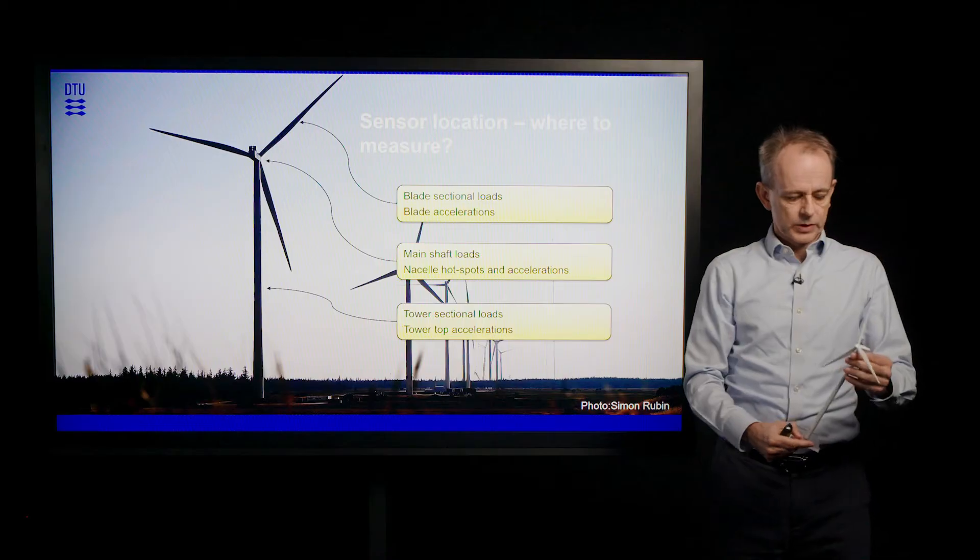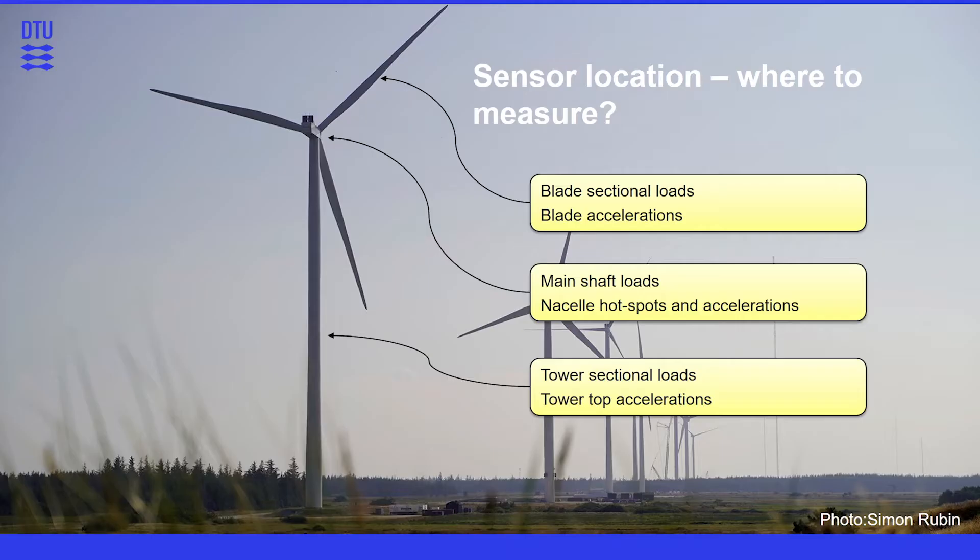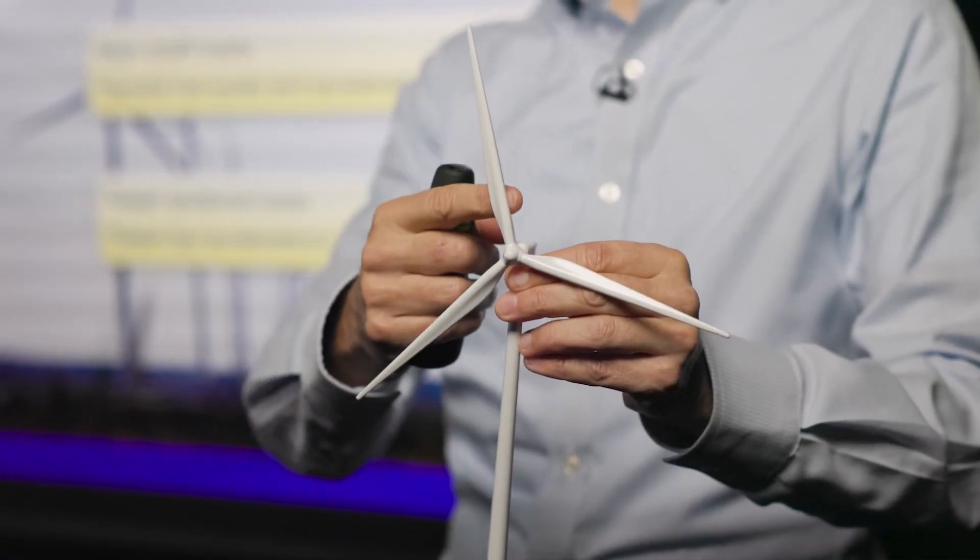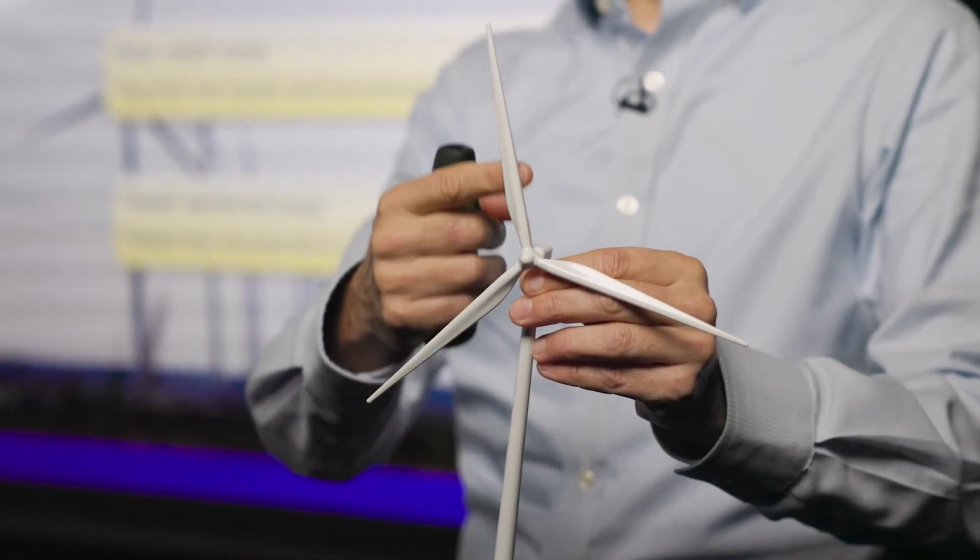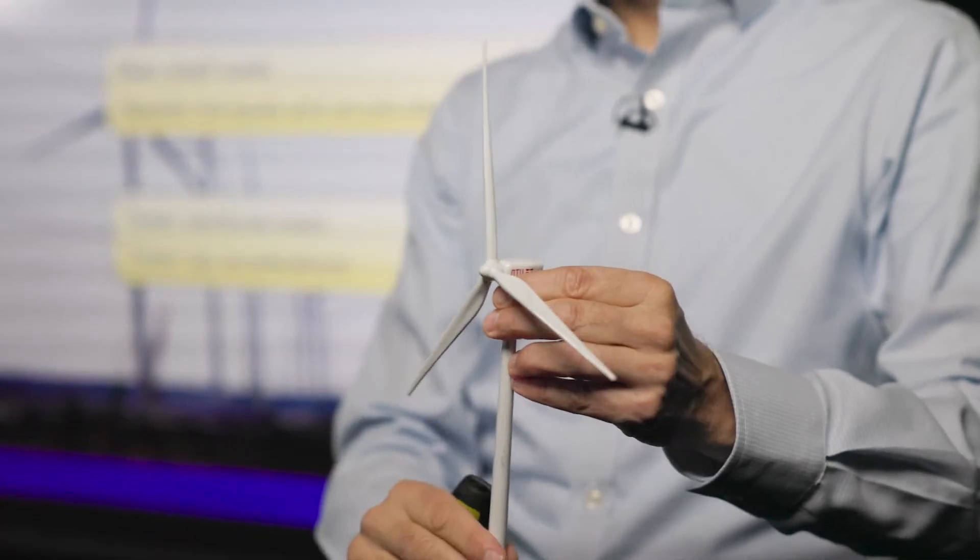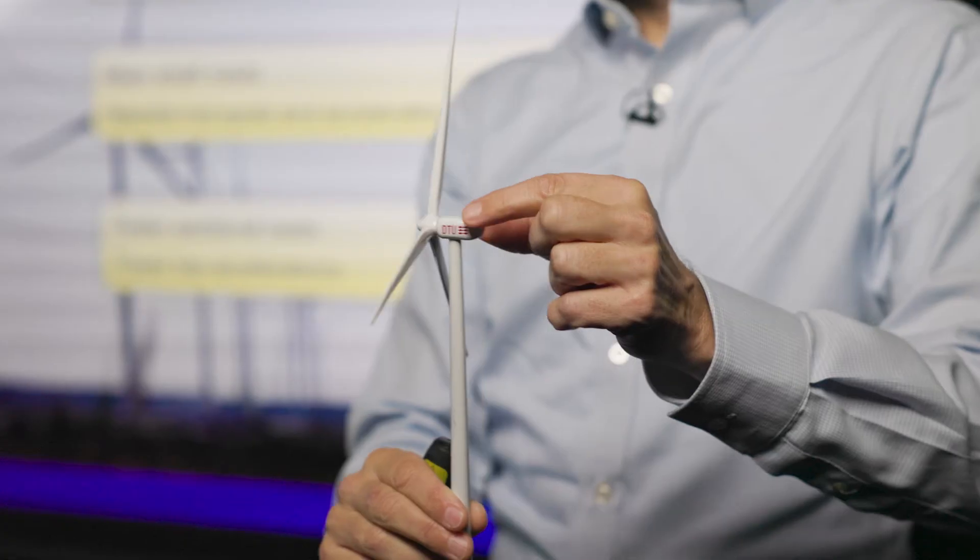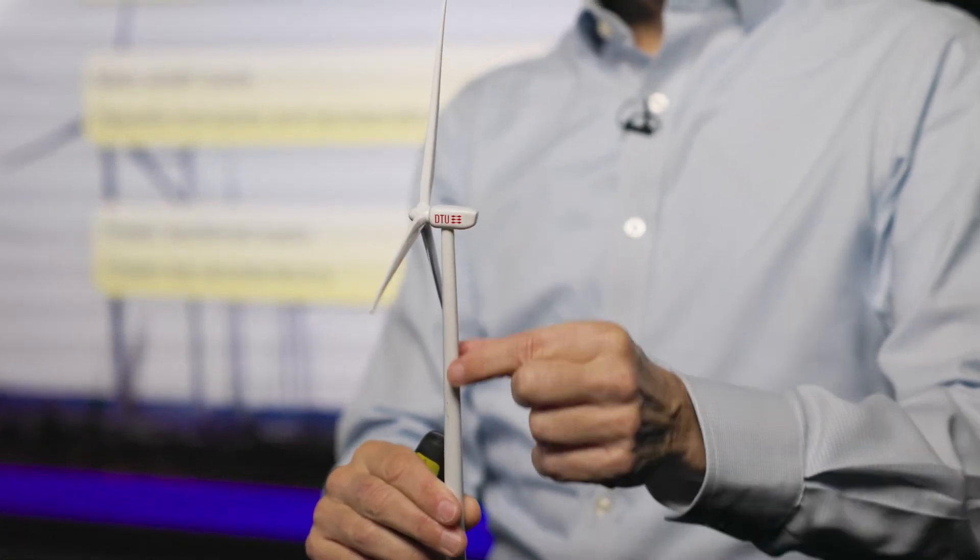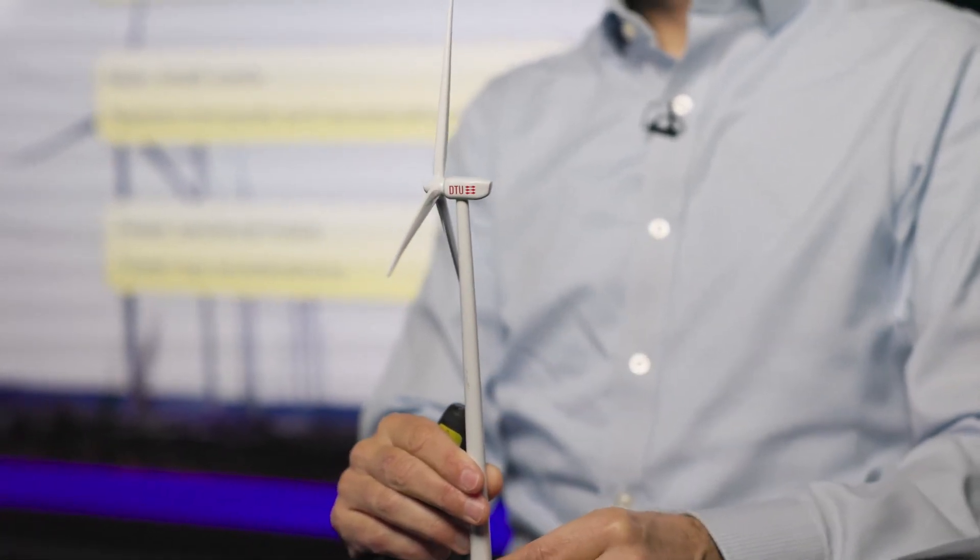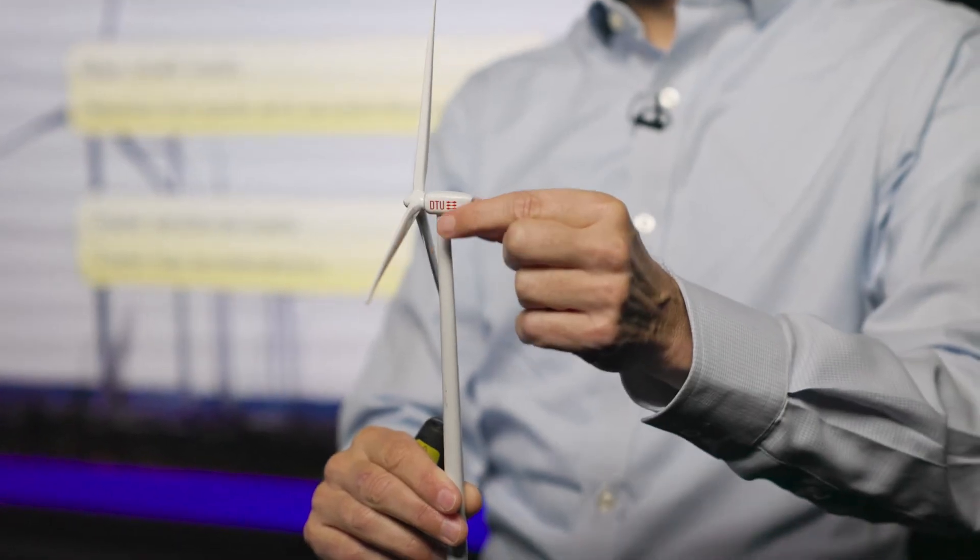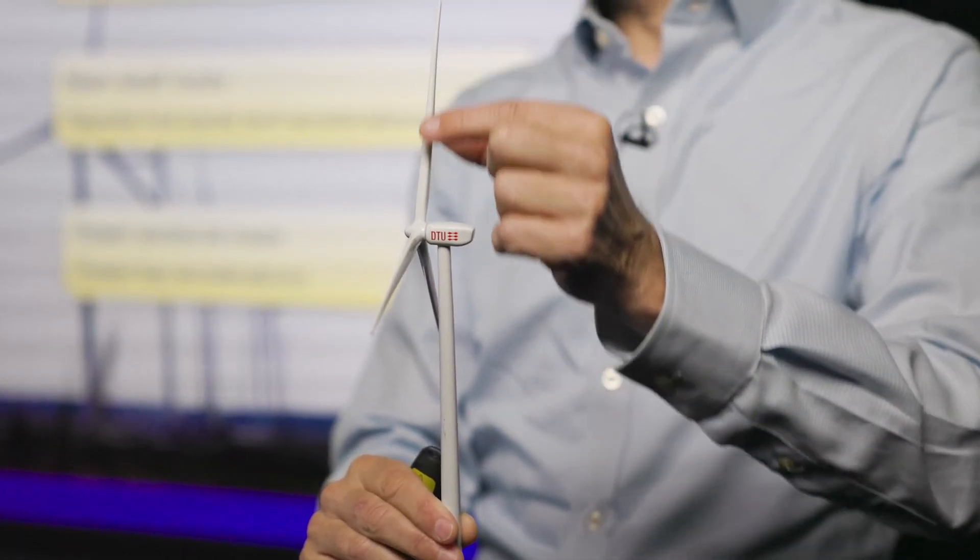When we talk about measurements, we measure at many different locations in the turbine. And typical measurements are done on the blades at different positions in the blades and different directions in the blade. It's measured in the nacelle of the turbine on the main shaft, and it's measured at various places along the tower. So we measure the sectional loads and accelerations in all of these places.